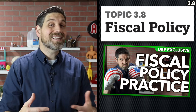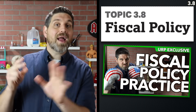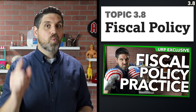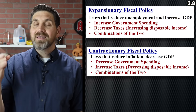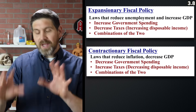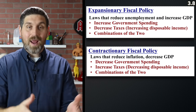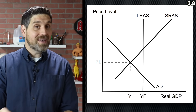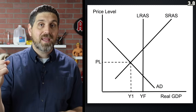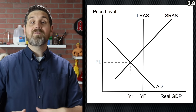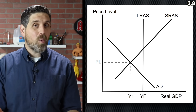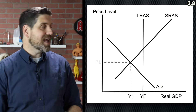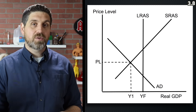Topic 3.8 — now the government is going to get involved in the economy. There are two types of fiscal policy: expansionary and contractionary. Answer questions one and two under topic 3.8. Fiscal policy is when the government manipulates the economy by changing government spending, taxes, or transfer payments. Transfer payments are like welfare or stimulus checks given directly to individuals. If we have a negative output gap, the government can increase government spending, cut taxes, or give more transfer payments, which would increase aggregate demand. They're doing this because they don't want to wait for the economy to self-adjust — instead they take an active role with expansionary fiscal policy to close the gap.